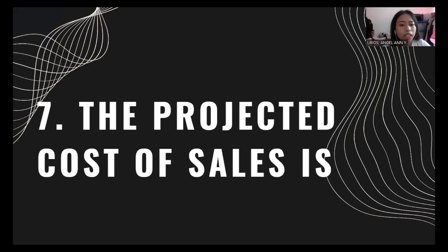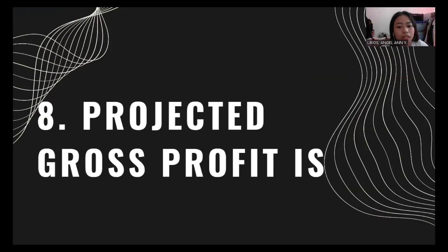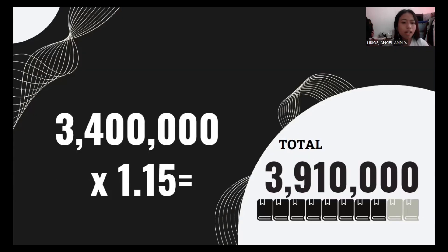Number seven, the projected cost of sales: current cost of sales of 5,100,000 multiplied by 1.15 equals 5,865,000, which is the projected cost of sales. The projected gross profit is the gross profit of 3,400,000 multiplied by 1.15, which equals 3,910,000.